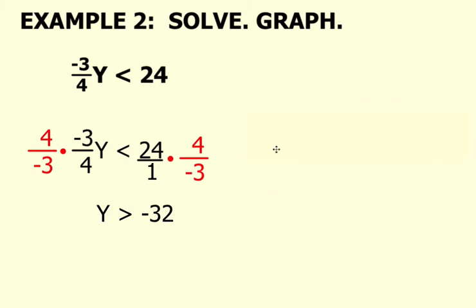So when we graph this, you're going to use an open circle on negative 32 and shade towards the right because that represents all the y values that are greater than negative 32. And remember, it's an open circle on negative 32 because negative 32 is not part of the solution set.